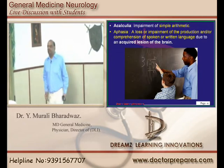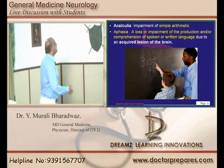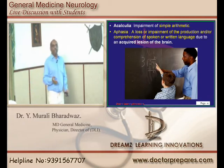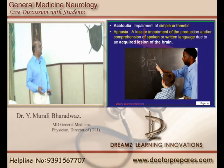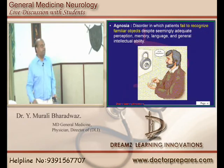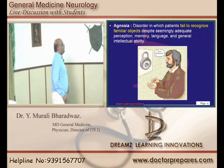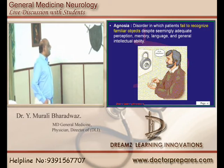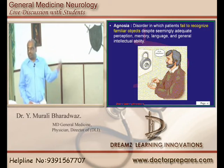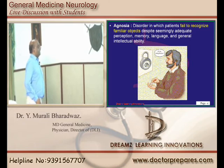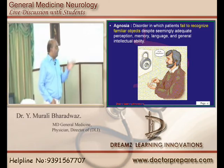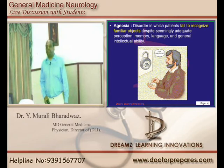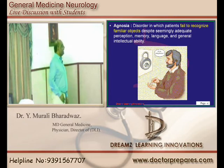Acalculia is the loss of ability to perform simple arithmetic calculations. Aphasia is a loss of production of comprehensible speech and written language due to a lesion in the brain. Agnosia is failing to recognize familiar objects or familiar faces — called visual agnosia. In spite of good perception, good memory, good language, and good general intellectual ability, if the person fails to recognize familiar objects, that is called agnosia.